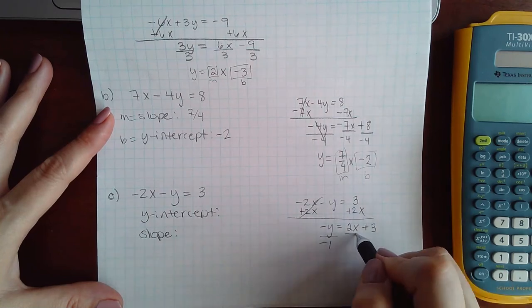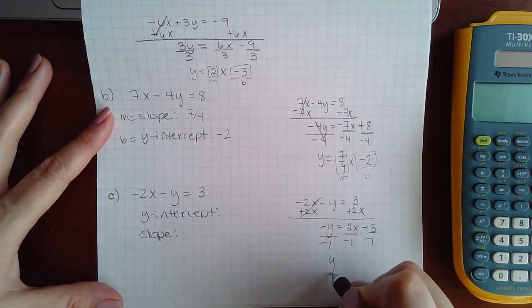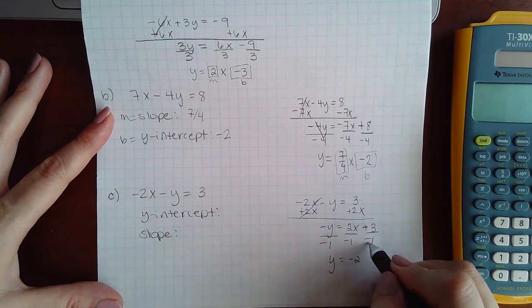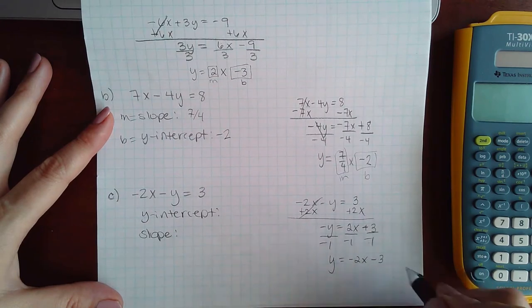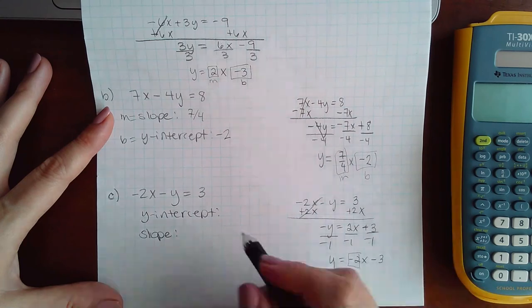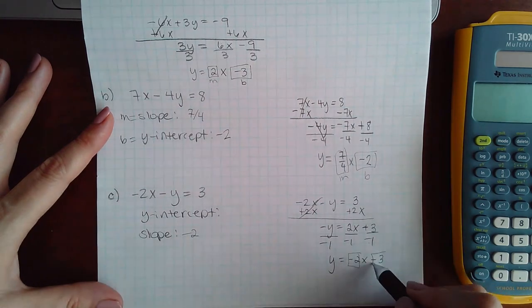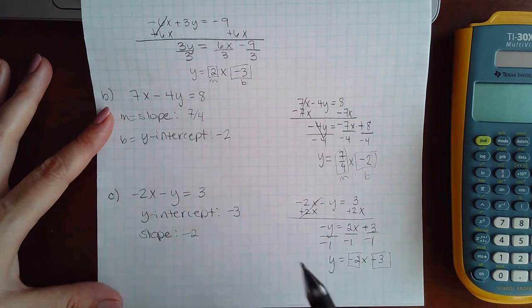Then divide everybody by the negative 1 so that y is completely by itself and I get negative 2x and a negative 3. So my slope now is negative 2 and my y-intercept is negative 3.